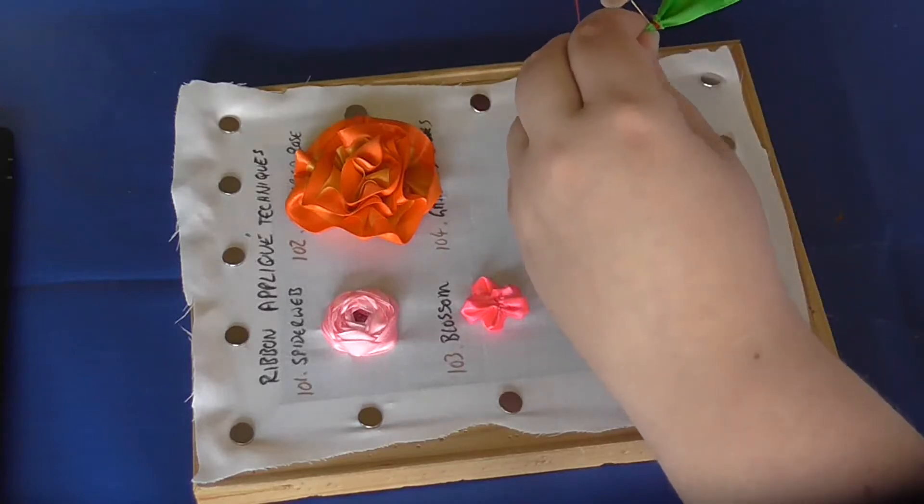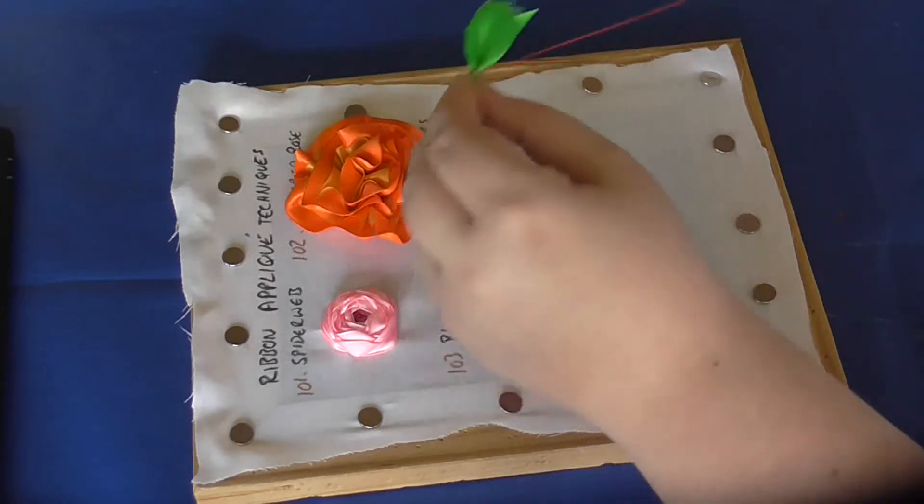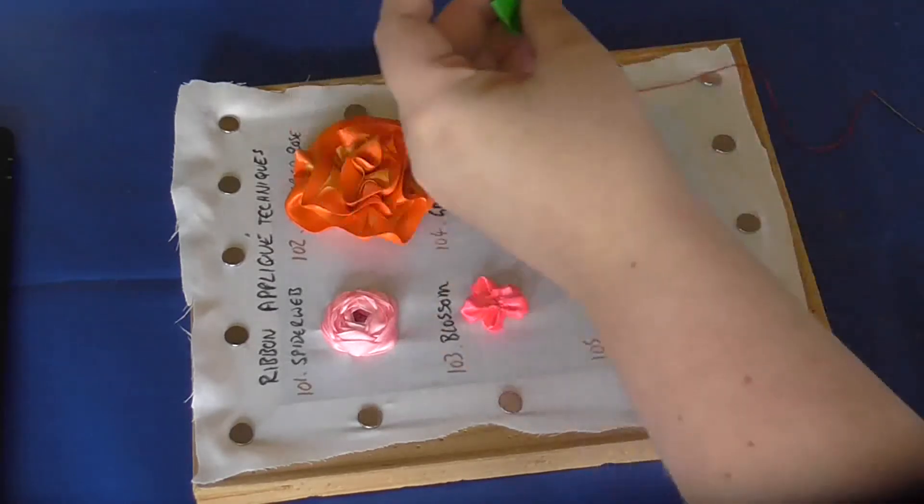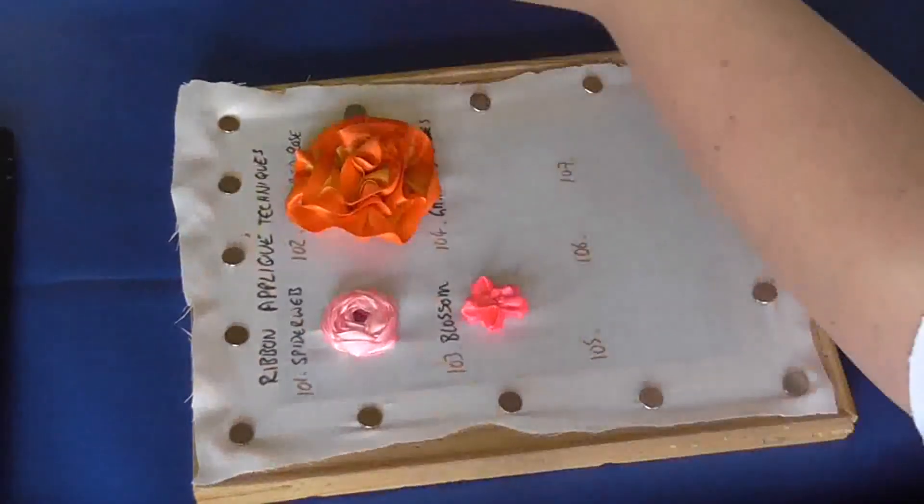You end up with kind of half of a bow tie shape. Trim off your excess.